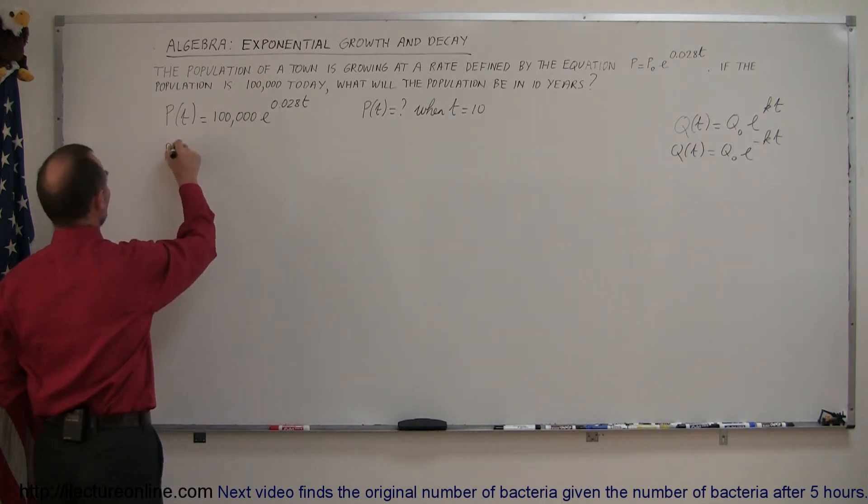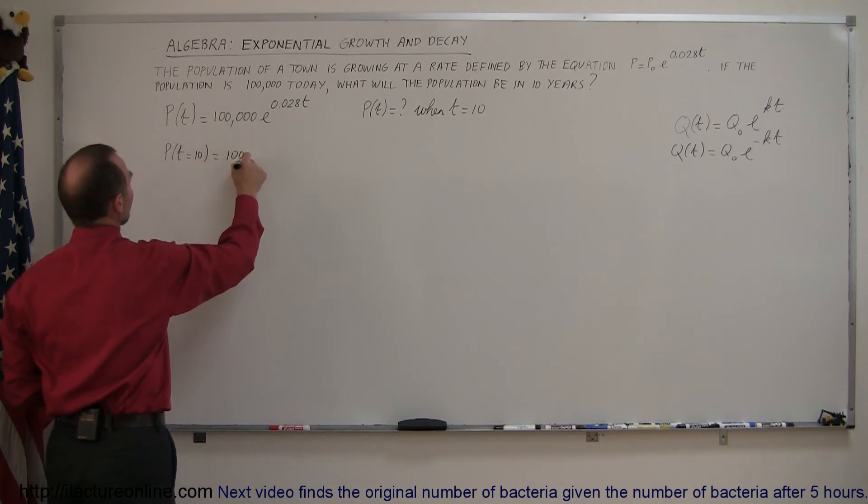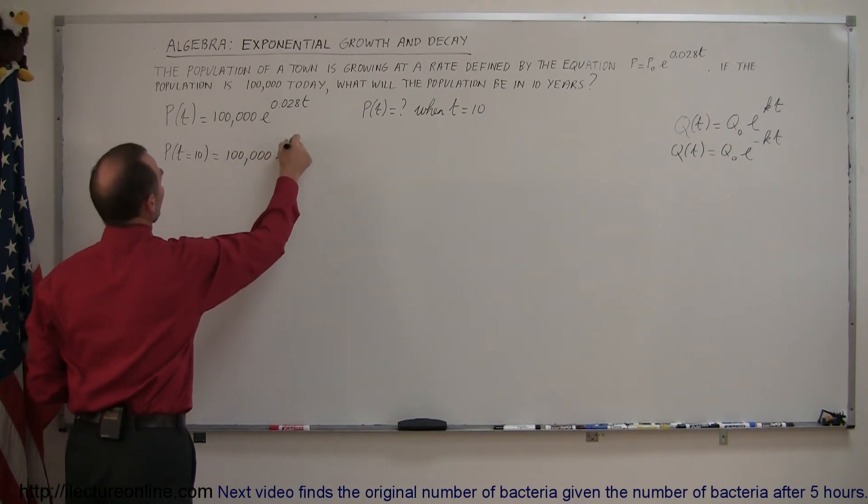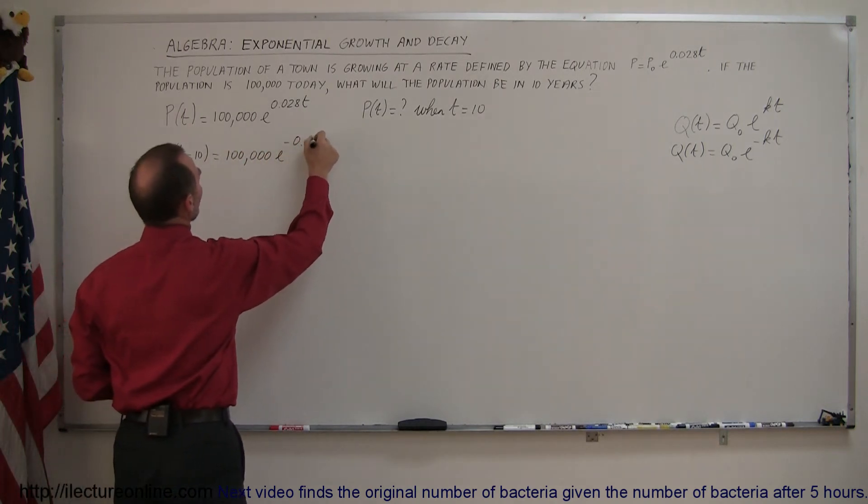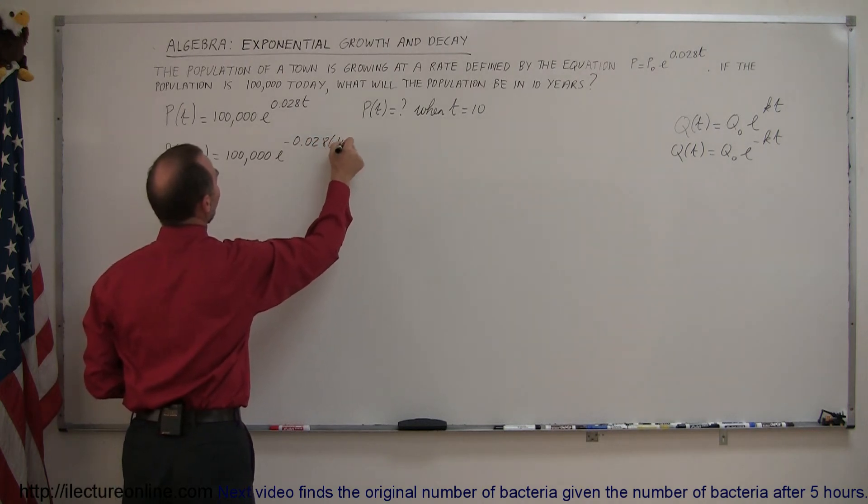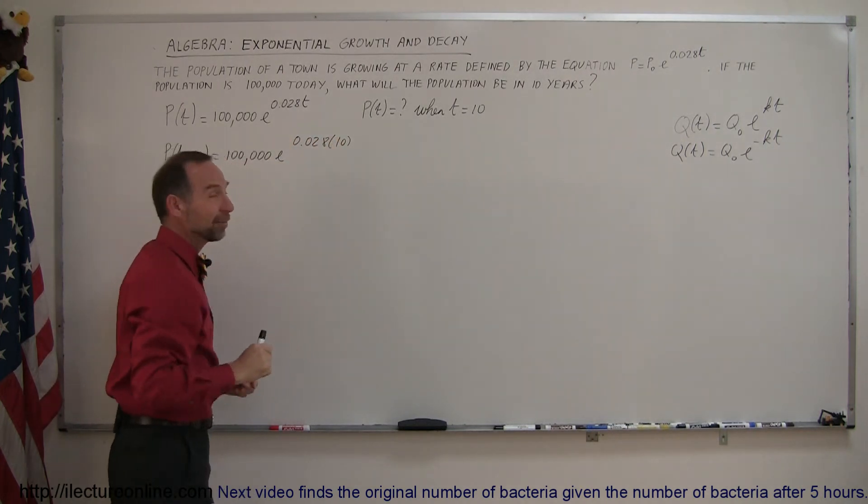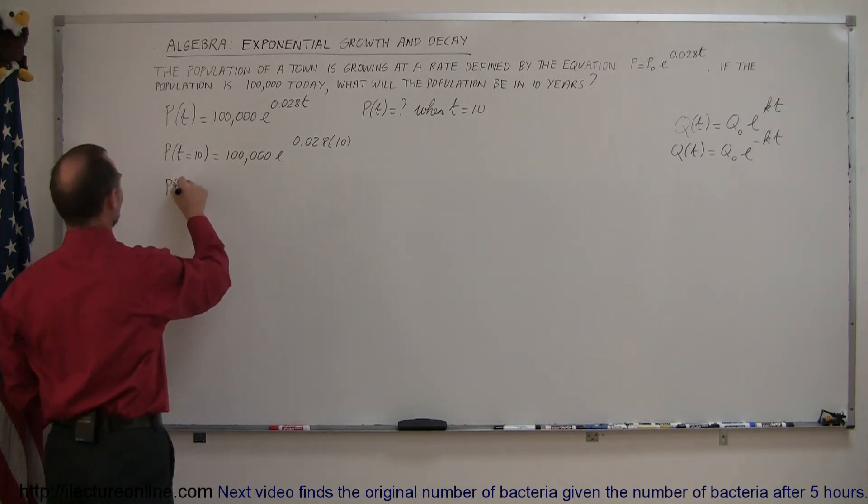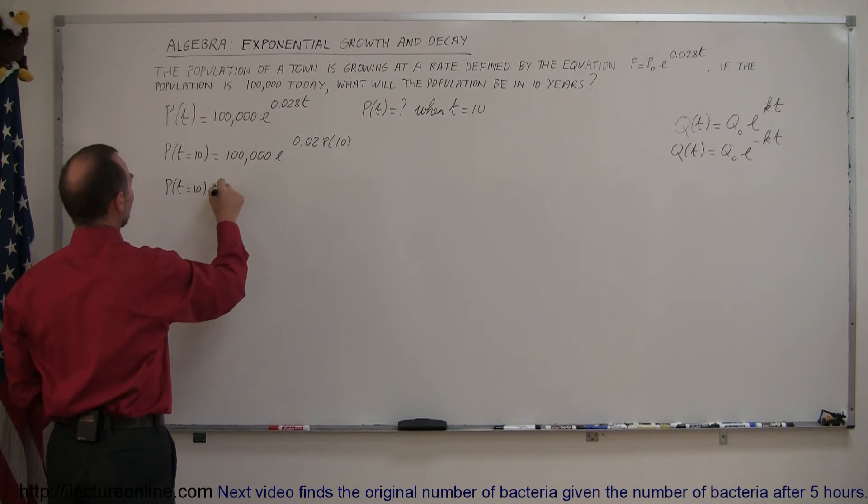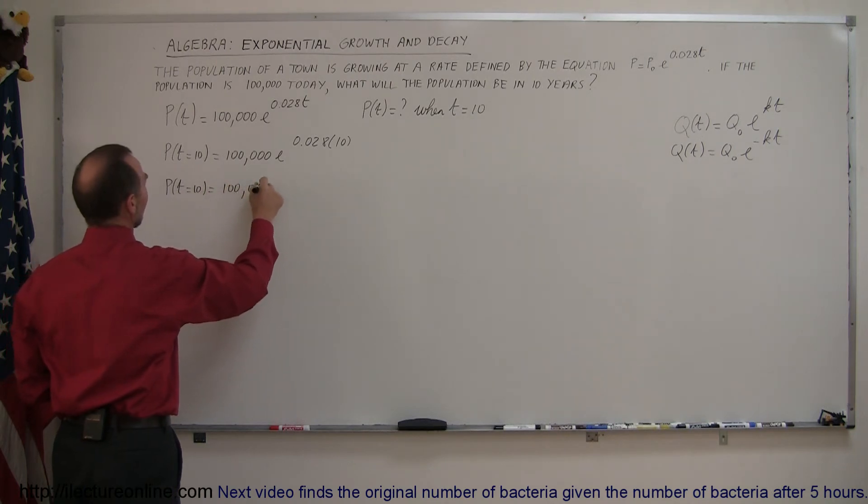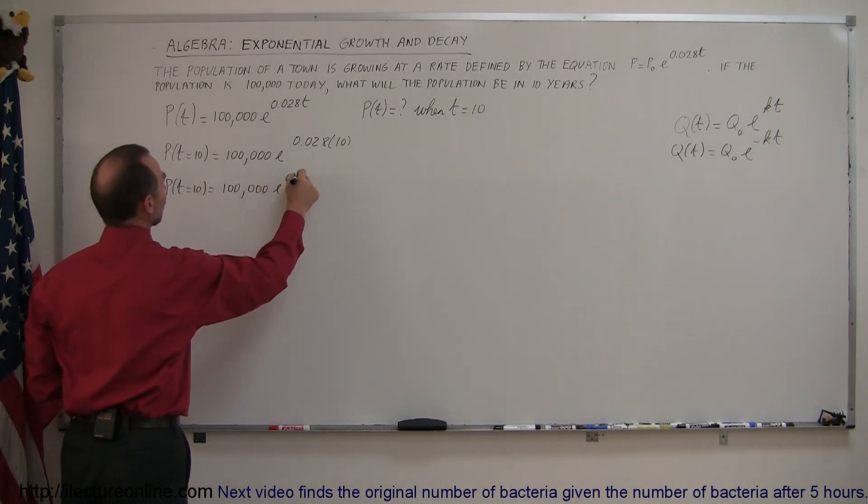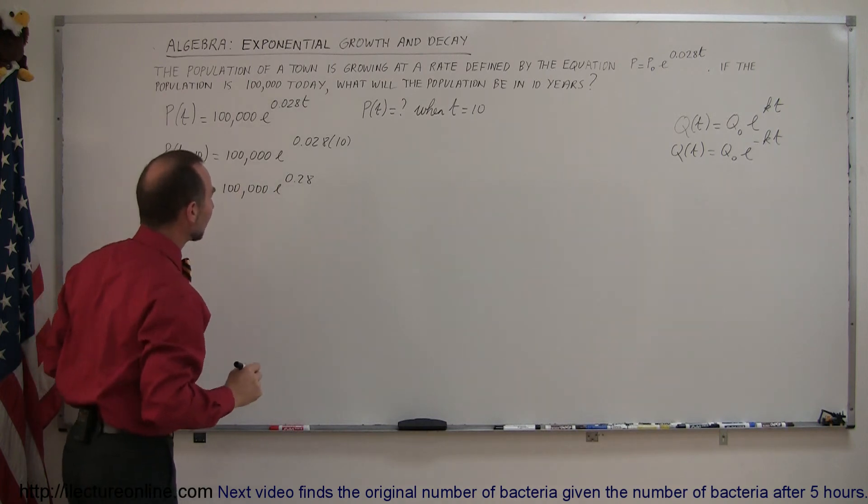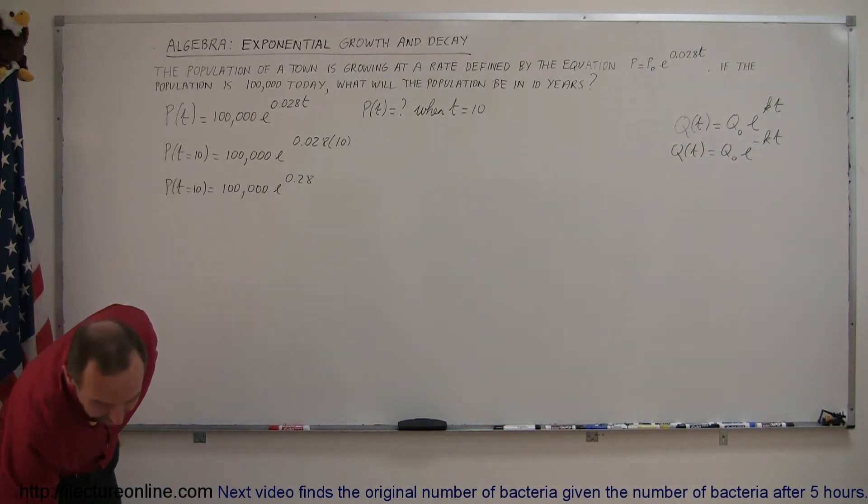So the population when time equals 10 years later is equal to 100,000 times e to the—I keep wanting to put minus there. That's not a good thing because the population is growing here. So the population as a function of time equals 10 is equal to 100,000 times e to the 0.28. And now we need a calculator.